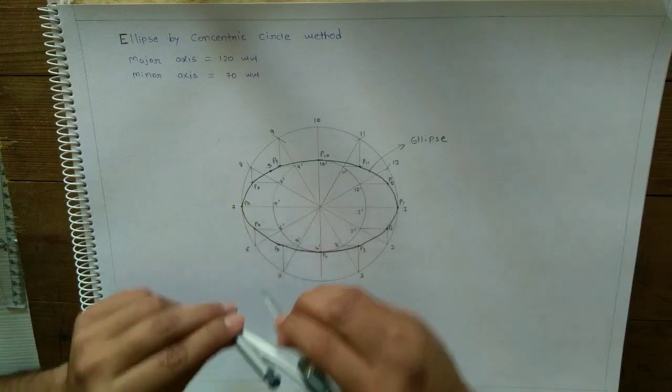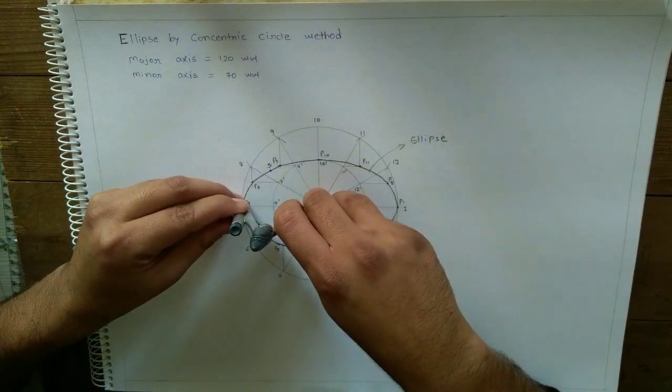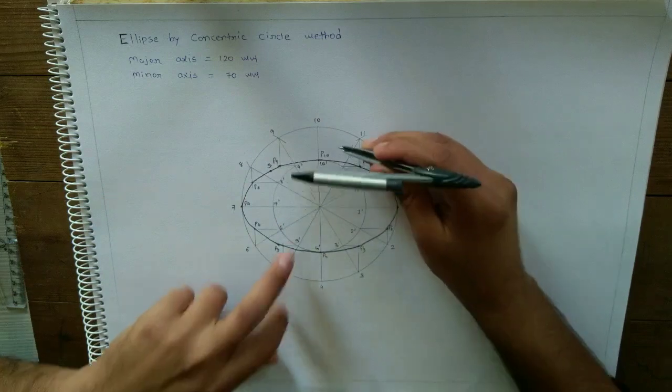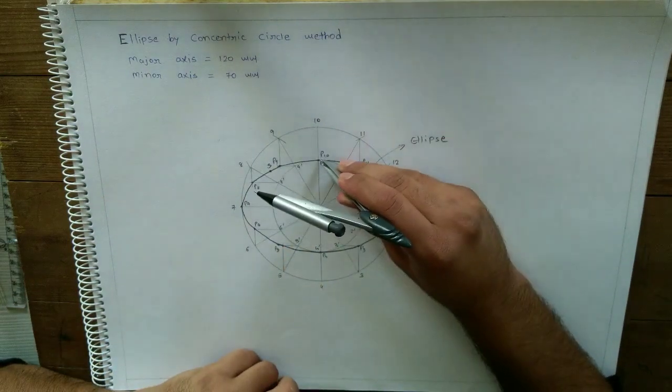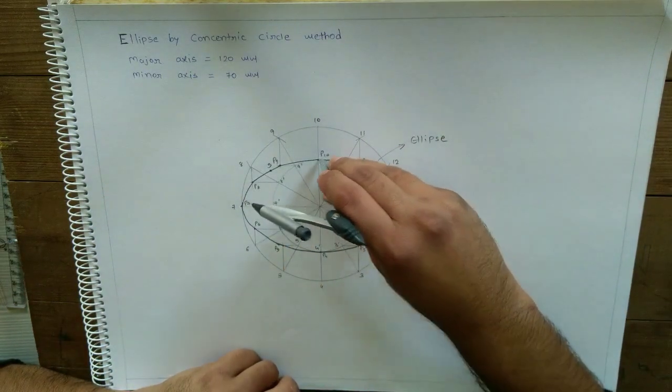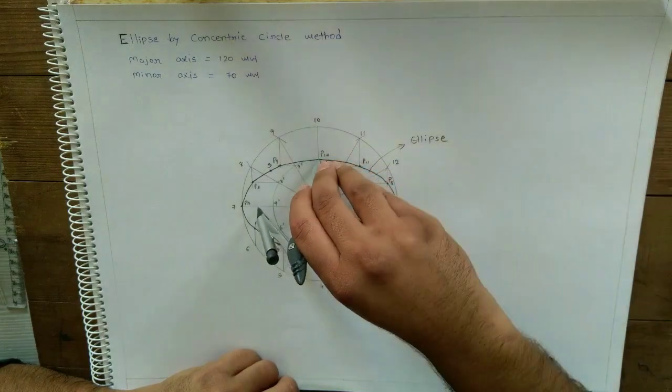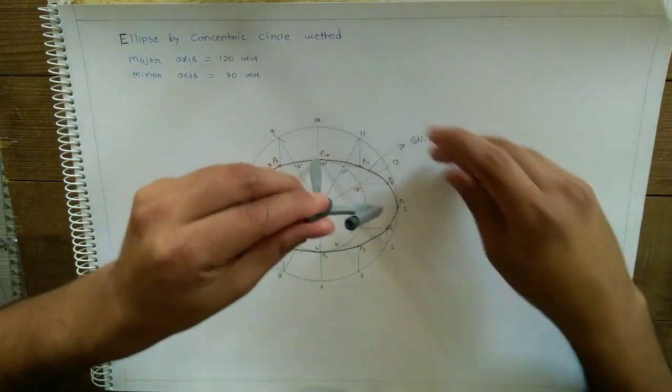Half of that major axis, take this distance in rounder, then put the center of this rounder on the minor axis, end point of the minor axis, and cut arc.